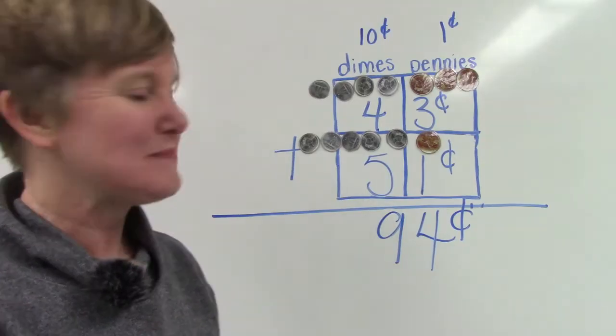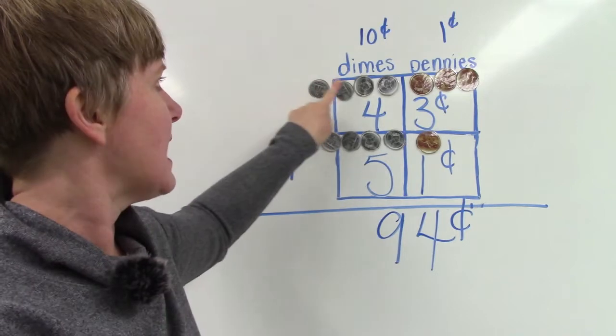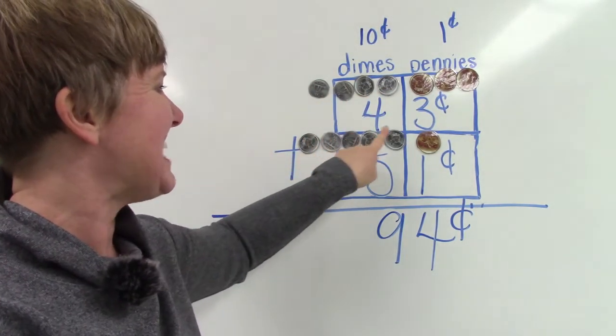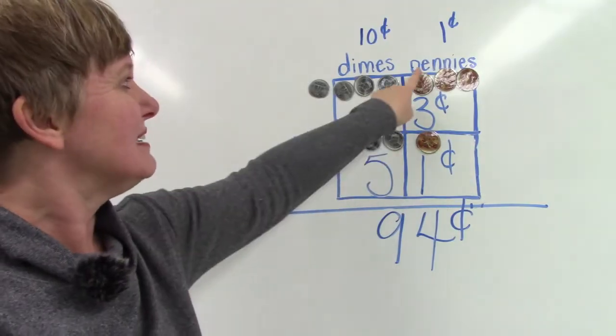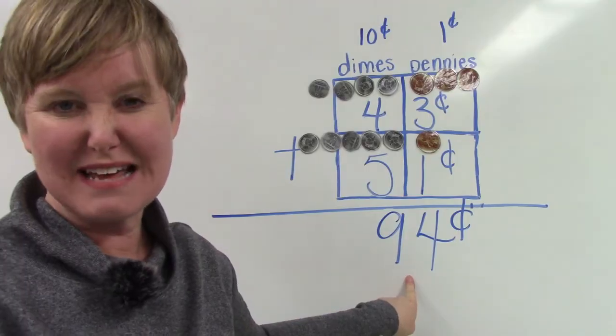Count the money with me. When we count dimes, we count by 10. 10, 20, 30, 40, 50, 60, 70, 80, 90, 91, 92, 93, 94. 94 cents.